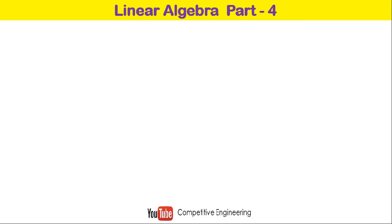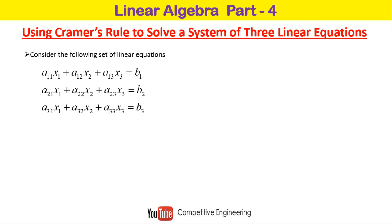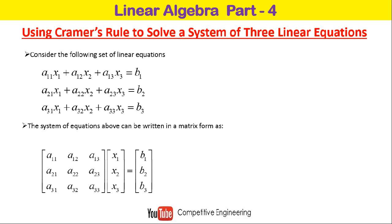Now we will go to three linear equations involving three variables x, y, and z, following the same method. The system looks like: a11·x1 + a12·x2 + a13·x3 = b1, a21·x1 + a22·x2 + a23·x3 = b2, and a31·x1 + a32·x2 + a33·x3 = b3, where x1, x2, x3 are the variables, a11, a12, etc. are the coefficients, and b1, b2, b3 are the right-side values.